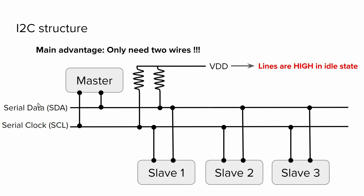The main advantage of using the I2C protocol is having only two lines: the serial data line and the serial clock line. Using these two lines we can connect as many slaves, as many sensors, to the master microcontroller. Imagine having 20 sensors and being able to read all of them using just two lines. It is also worth mentioning that these two lines are high by default because of pull-up resistors.